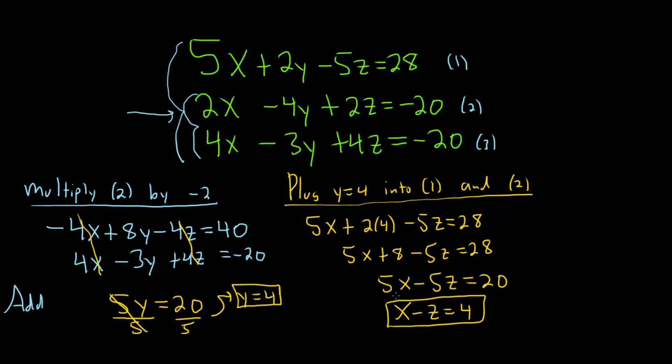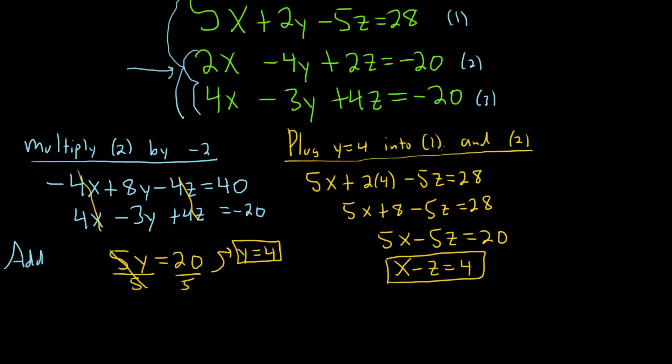Now let's plug it into the second one. So it'll be 2x minus 4, and then we're plugging it in here. So 4 plus 2z equals negative 20.